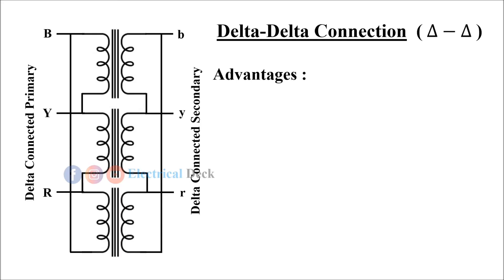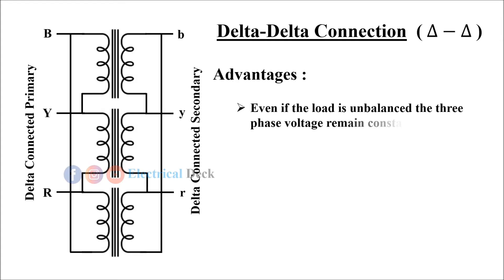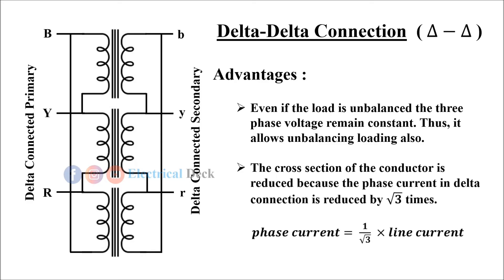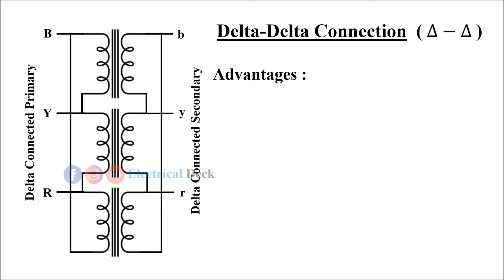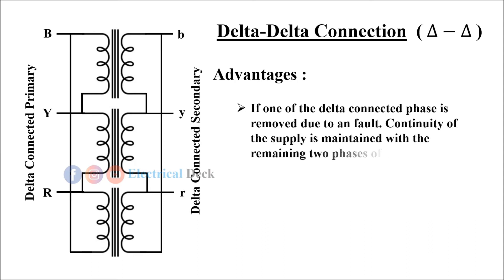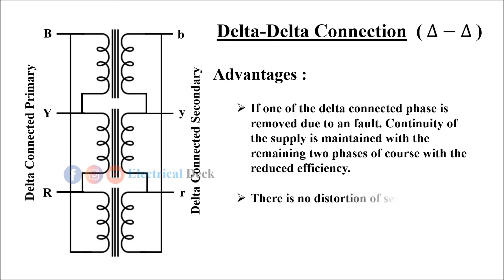The advantages of using delta-to-delta connection are: even if the load is unbalanced, the three-phase voltages remain constant, thus it allows unbalanced loading also. The cross-section of the conductor is reduced because the phase current in delta connection is reduced by root three times. If one of the delta-connected phases is removed due to a fault, continuity of the supply is maintained with the remaining two phases, with reduced efficiency.